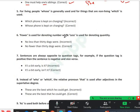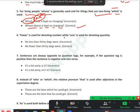We are moving to the fifth point. For living people, 'whose' is generally used, and for non-living things, 'which' is used. For example: which phone is kept on charging. This is for non-living things, so 'whose phone is kept on charging' is correct. Clear? Yes sir.